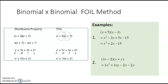Remember, like terms have to have the same variables and the same exact exponents. This result is actually in order by degree: two second-degree terms, then two first-degree terms. When we have two terms with the same degree, we go alphabetically. Since the first two terms are both degree 2, we put the x squared term first. Same for the last two terms — both first degree, but we write the x term first because x comes before y alphabetically.